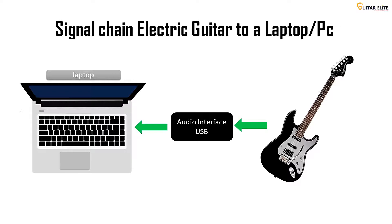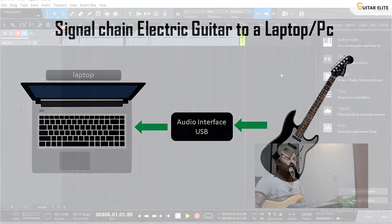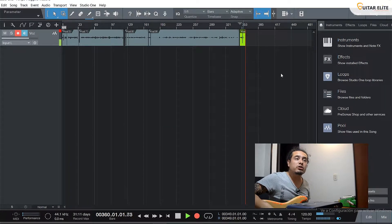The first thing to have in mind is, of course, the signal chain. As you can see on the image, you will connect your guitar to your audio interface, and the audio interface to your laptop or your PC. Some digital pedalboards, like the Line 6 POD HD 500X that I have, work as an audio interface — so if you have one of them, you can use it as your audio interface.